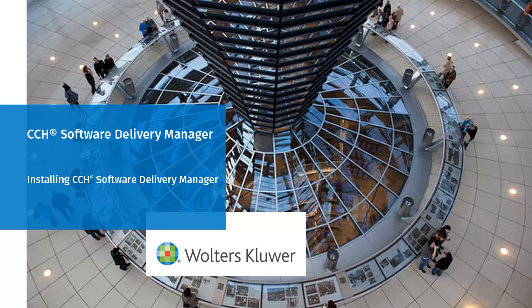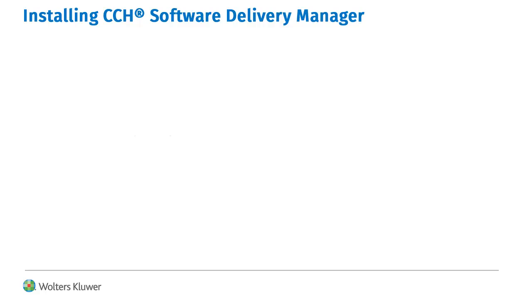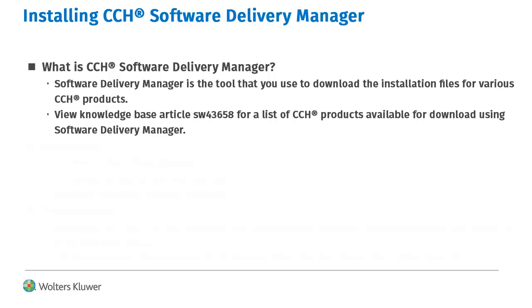Hello, welcome to the video to learn how to install CCH Software Delivery Manager. CCH Software Delivery Manager is used to download the latest installation files for some of the various CCH products that you license. When a new version of one of these products is released, use Software Delivery Manager to download the product installation files so that you can then install the update.